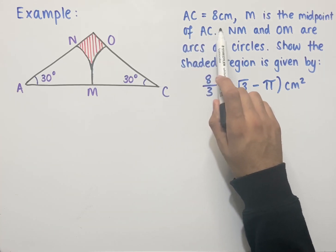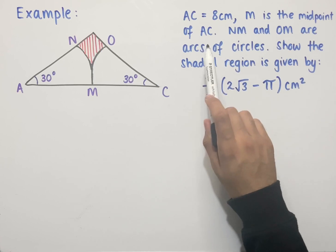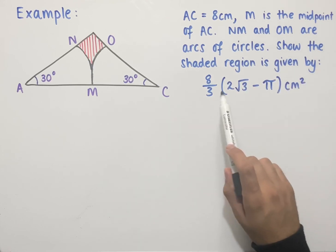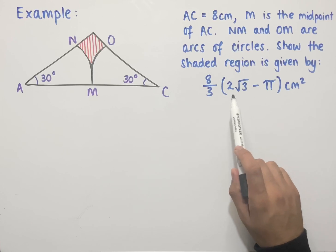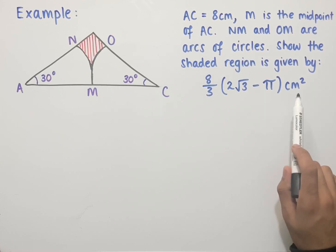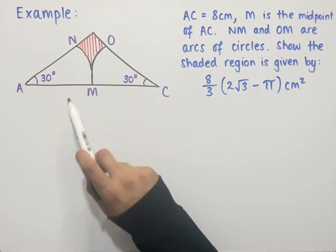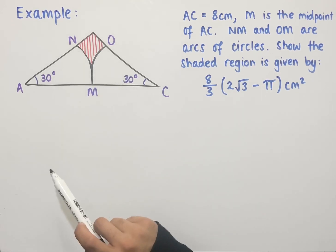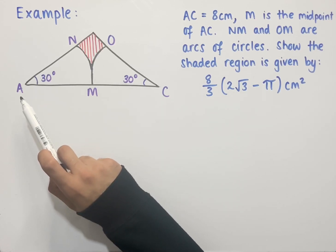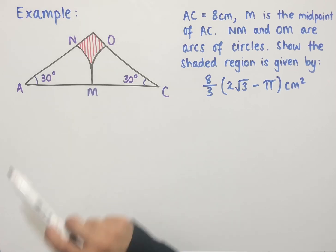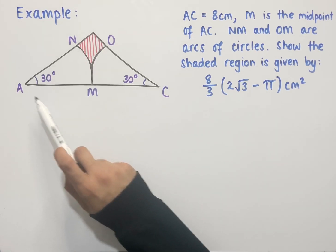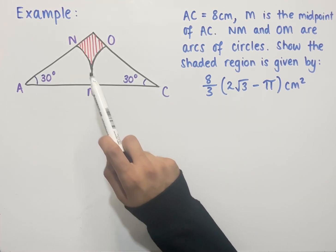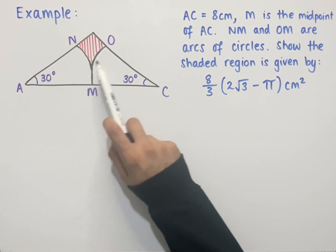The question states AC equals 8 centimetres and M is the midpoint of AC. NM and OM are arcs of circles. We need to show the shaded region is given by 8 over 3 multiplied by, in brackets, 2 root 3 minus pi, centimetres squared. We have an isosceles triangle within this diagram since the base angles are equal, and also two sectors which are both equal to each other. To work out the shaded region marked in red, we work out the area of the isosceles triangle, then subtract the area of the two sectors.